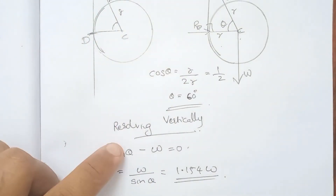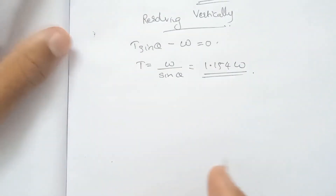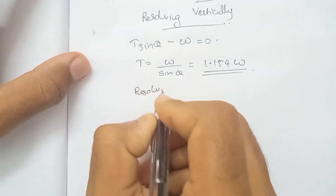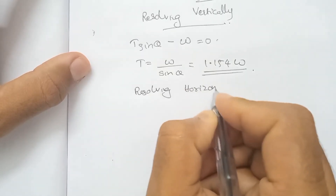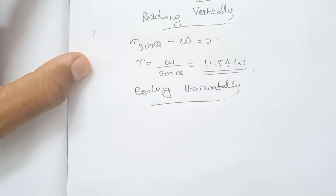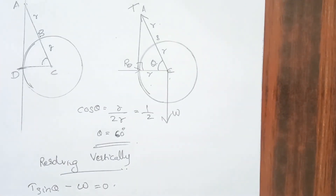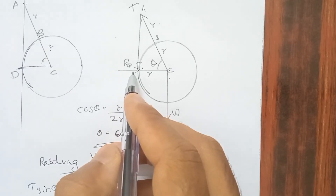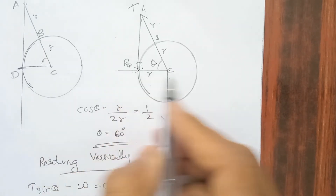Having resolved vertically, we now resolve horizontally. Resolving horizontally, we have the reaction force Rd acting to the right, and T cos theta acting to the left.